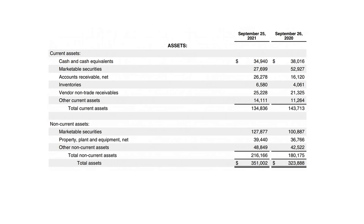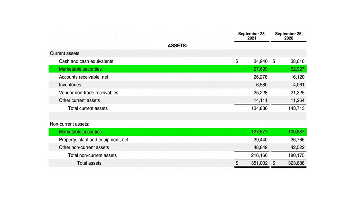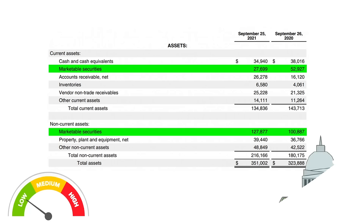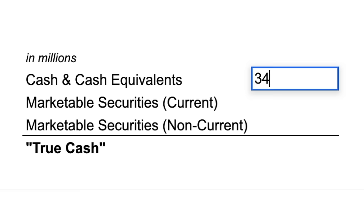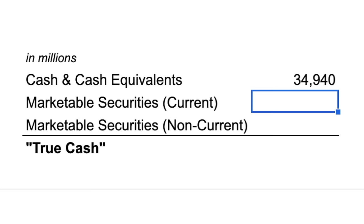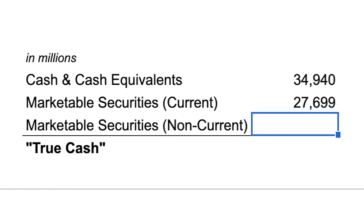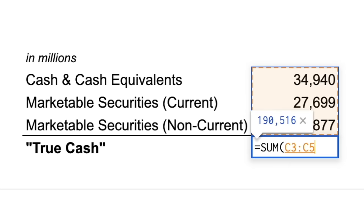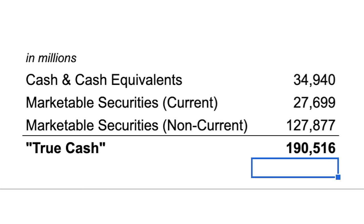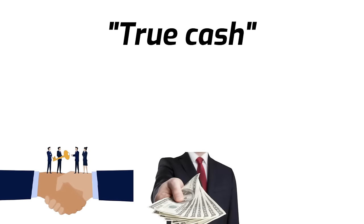Moving down the balance sheet, we have marketable securities. These are already low-risk and can be turned into cash relatively easily, consisting of things like government bonds. When calculating a company's true cash, I always like to add marketable securities into the cash and cash equivalents line. At the end of 2021, Apple had $34,940 in cash and cash equivalents, $27,699 in marketable securities, and $127,877 in non-current marketable securities. Adding these together gives us $190,516 in true cash — useful for understanding how much cash Apple has relative to its debt and how much it can use to buy companies, pay dividends, or repurchase stock.